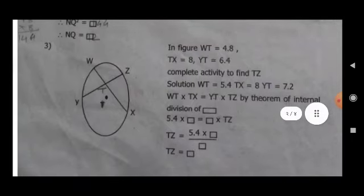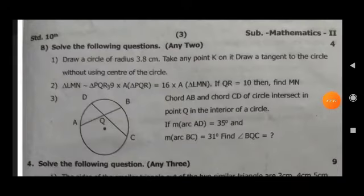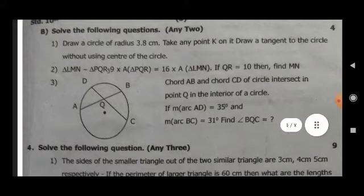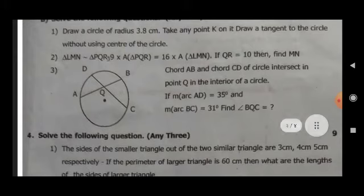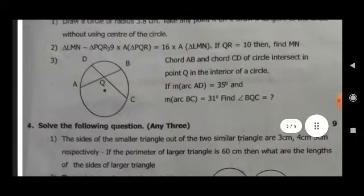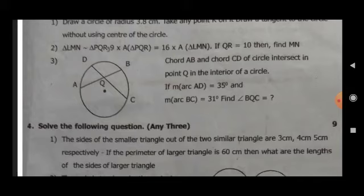Question 3 B, solve the following questions, any two. For marks at 4. First, draw a circle of radius 3.8 cm. Take any point K on it. Draw a tangent to the circle without using center of the circle. Second, triangle LMN is similar to triangle PQR. Nine into area of triangle PQR is equal to 16 into area of triangle LMN. If QR is equal to 10, find MN. Third, chord AB and chord CD of a circle intersect in point Q in the interior of the circle. If measure of arc AD is equal to 35 degrees and measure of arc BC is equal to 31 degrees, find angle BQC.